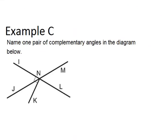And looking at our last example, name one pair of complementary angles in the diagram below. So complementary angles have to add up to 90, and a common place you'll see them is in a situation where there's a right angle that's been divided. So I see a right angle right here. So that means the two angles that make this right angle, that one and this one, are complementary.